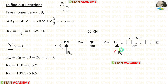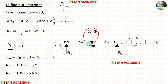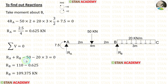To calculate RB, we apply the rule Sigma V = 0. RA and RB are acting upwards, so both are positive. The point load 50 kN and UDL 20 kN per meter are acting downwards, so both are negative. Applying the already calculated value of RA, we finally get RB.